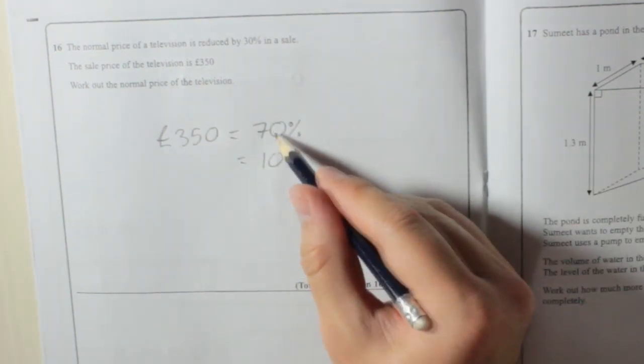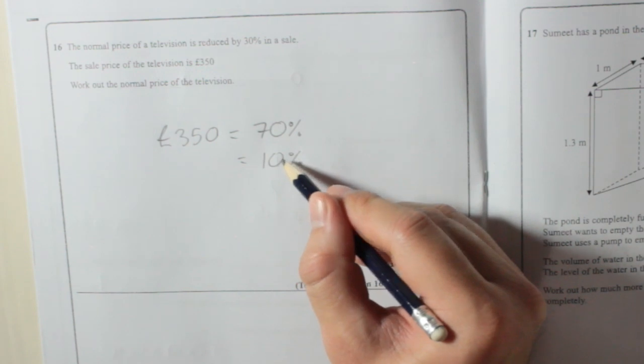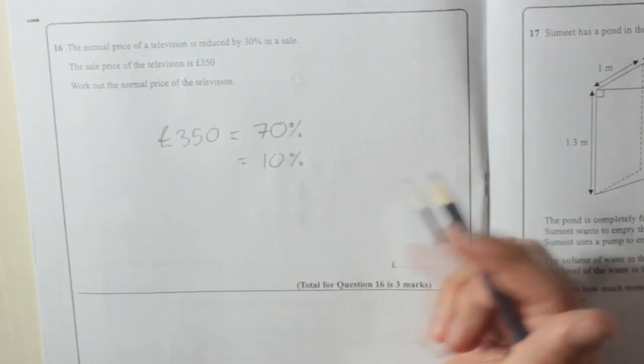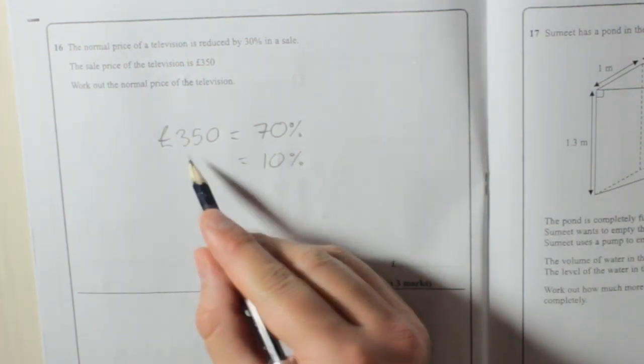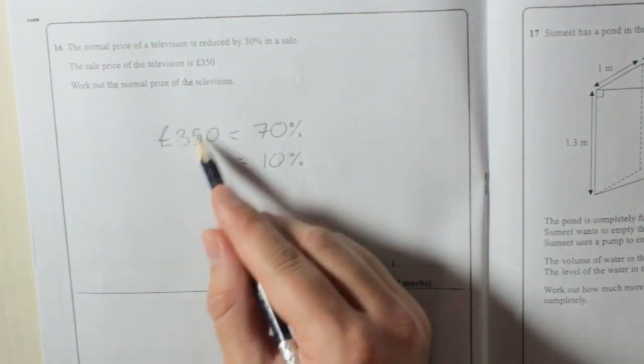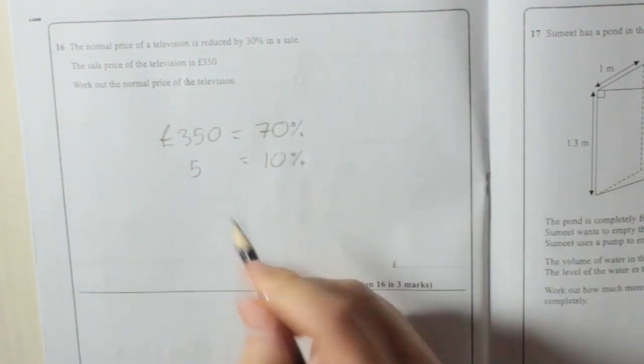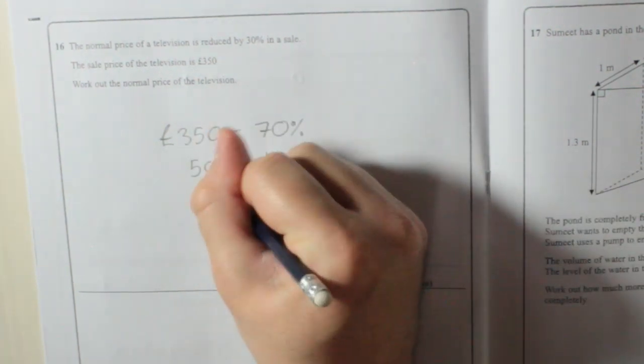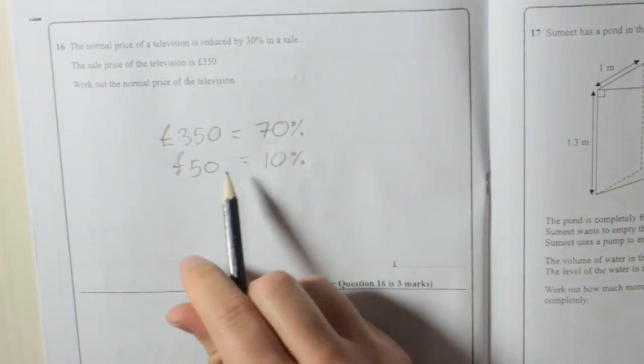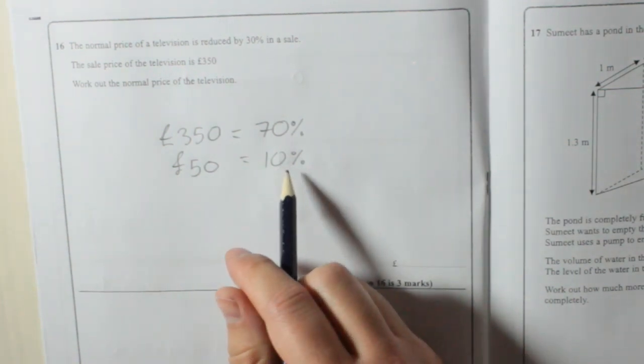What have I done to get from there to there? I've divided by 7. So I'm going to divide that by 7. Well, 35 - that's in the 7 times table. 35 divided by 7 is 5. So £350 divided by 7 is 50. So £50 is 10% of the actual price.